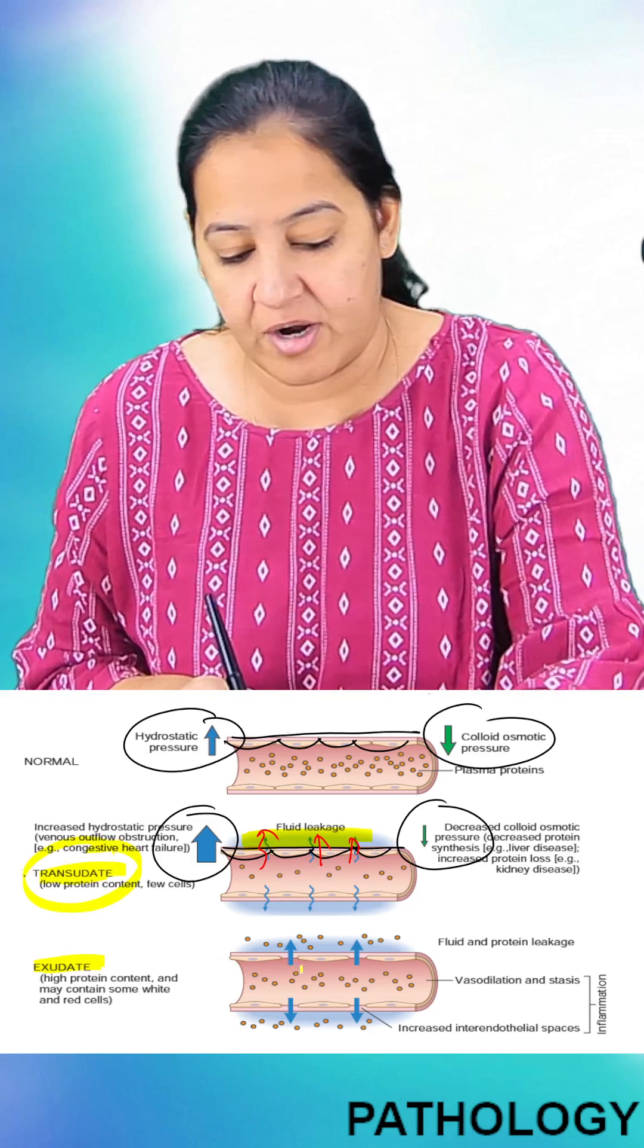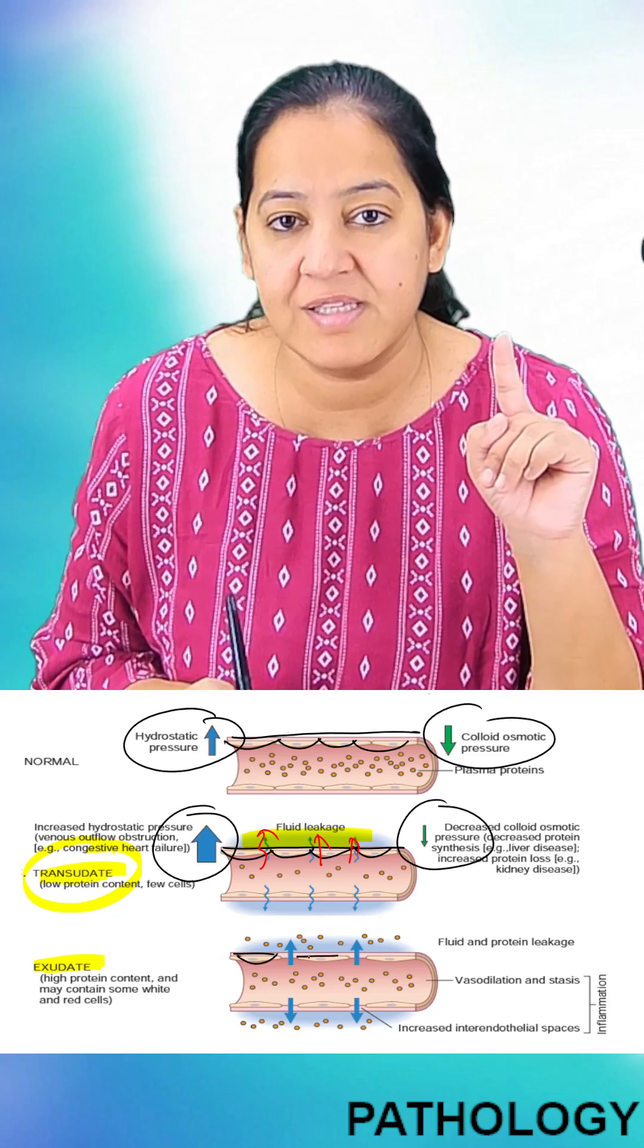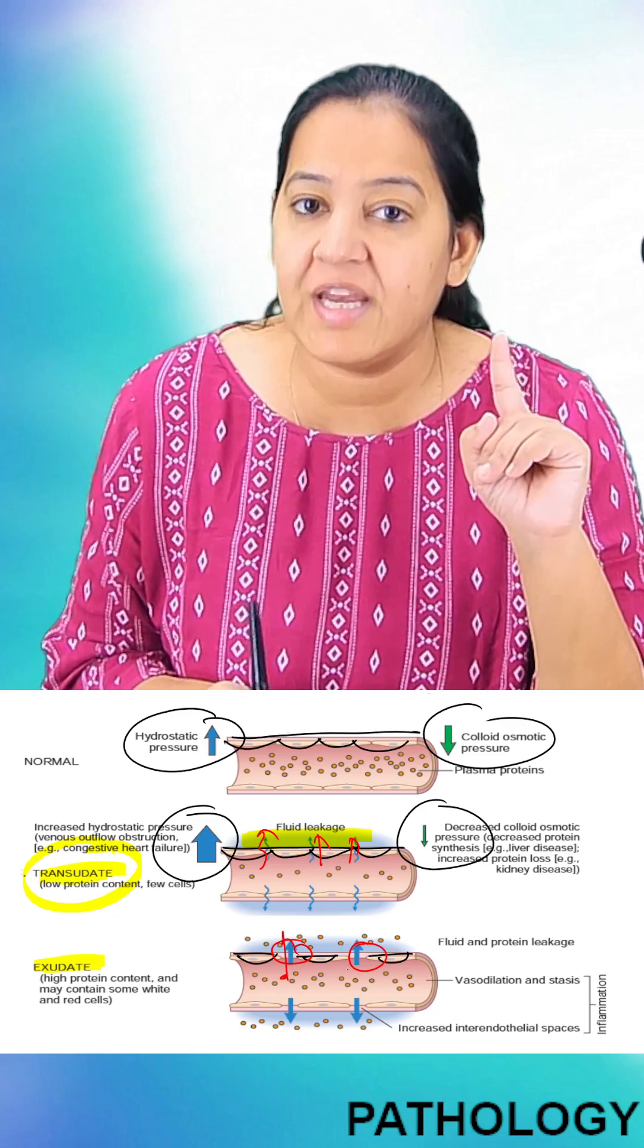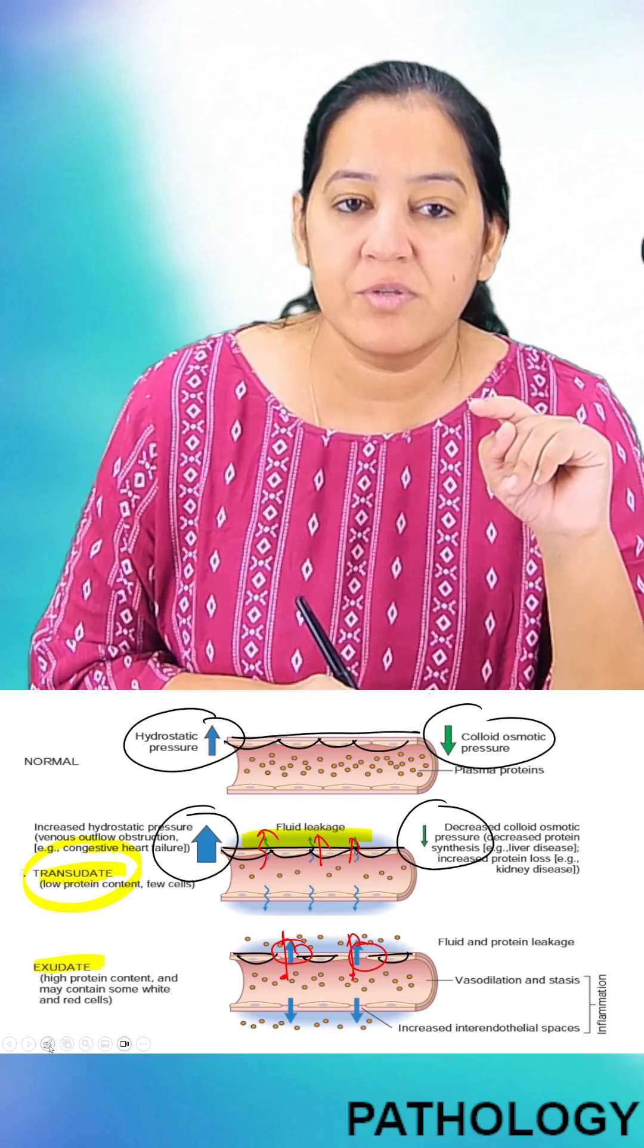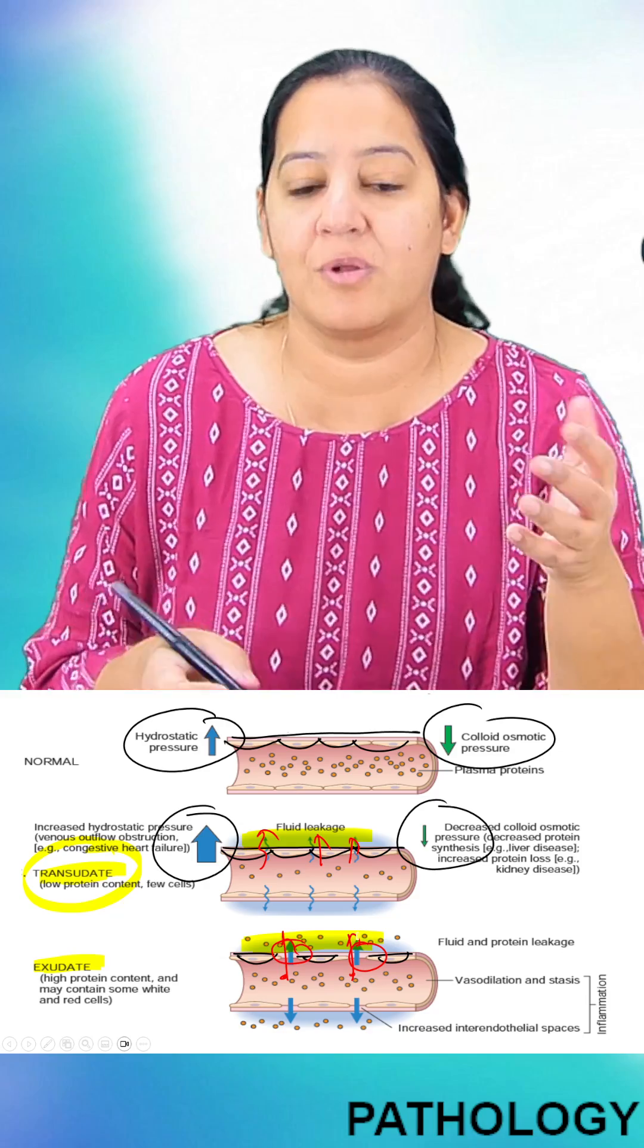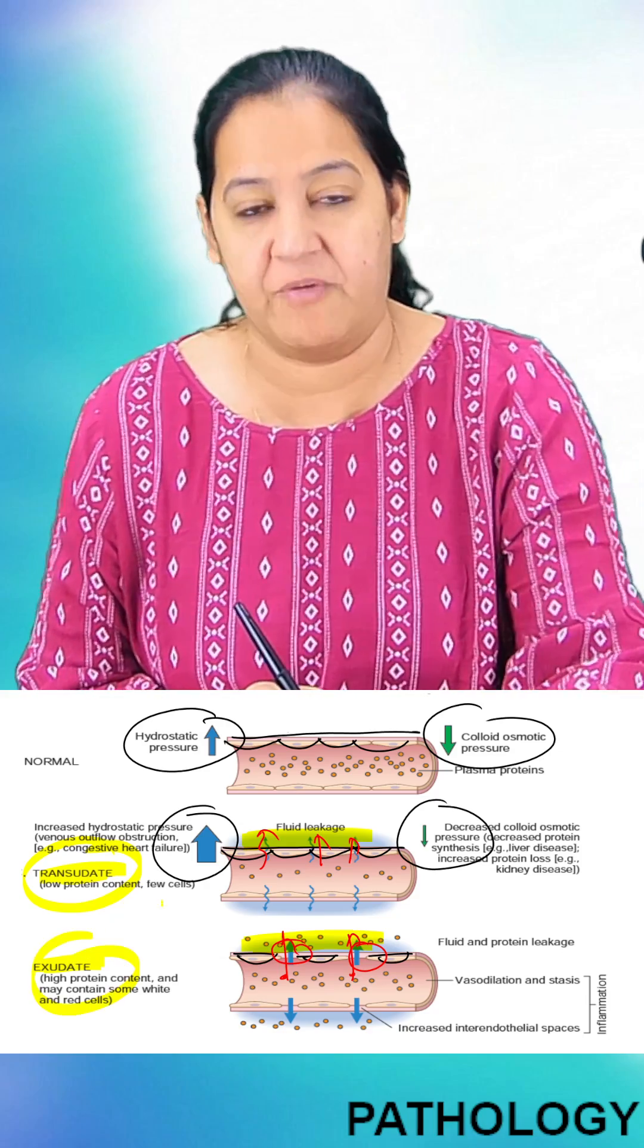Now see the third diagram. In this diagram, you can see the endothelial cells and you can appreciate the gaps between the endothelial cells. From these gaps, the proteins and the cells are also leaking out. Such an edema in which, along with the fluid, the cells and the proteins are also present is known as exudate type of edema.